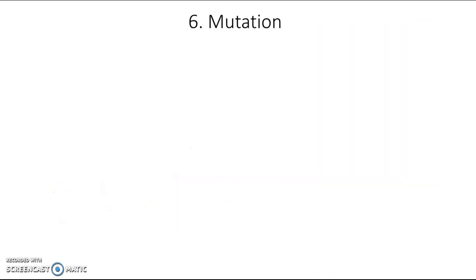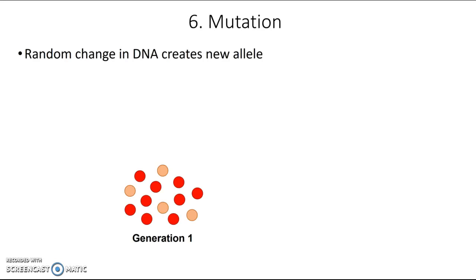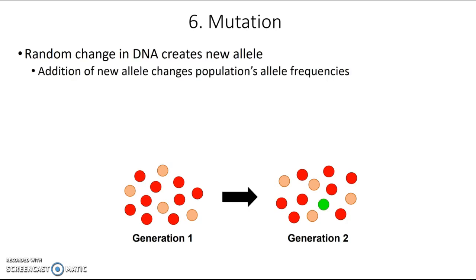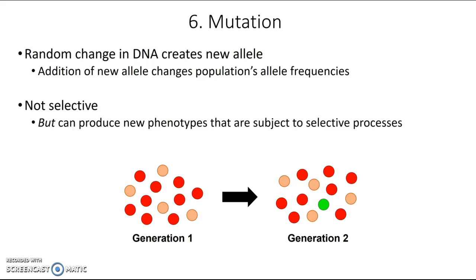The final mechanism of microevolution is mutation, which is a random change in DNA that can create a new allele. In a population of red and beige dots, a random DNA change might create a new allele coding for green color, changing allele frequencies. This is not a selective process — it's random — but it can produce new phenotypes that are then subject to selective processes. For example, if the green color makes an individual more visible to predators, it gets weeded out by natural selection; or if females love it, it increases in frequency via sexual selection. The initial mutation itself, however, is not selective.